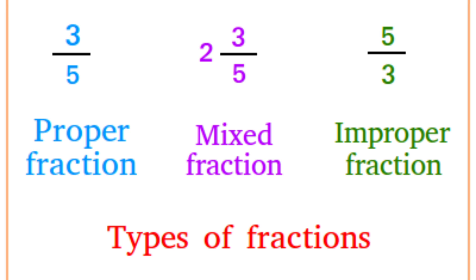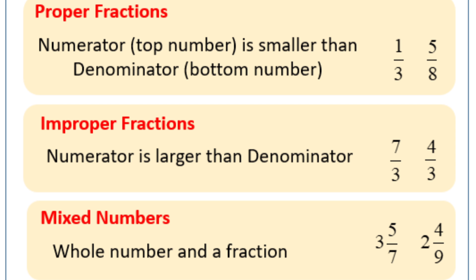In proper fraction, the numerator or the top number will be smaller than the denominator, that is the bottom number. Here you can see 1 by 3 and 5 by 8 — the numerators are smaller than their denominators, so they are proper fractions.